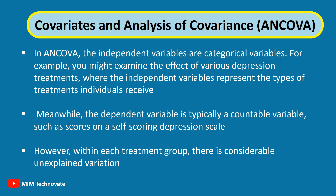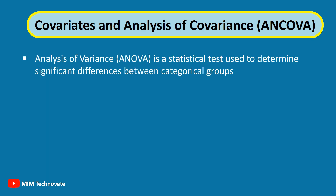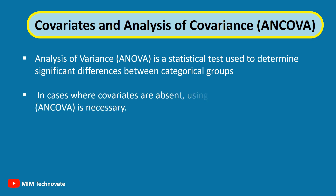In this context, the covariate plays an important role. Analysis of Variance, ANOVA, is a statistical test used to determine significant differences between categorical groups. In cases where covariates are present, using Analysis of Covariance, ANCOVA, is necessary.